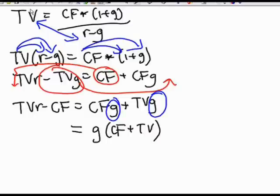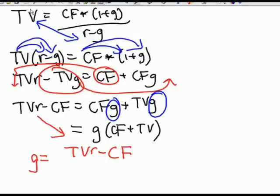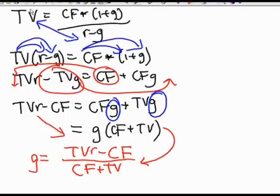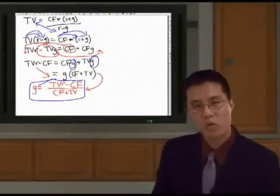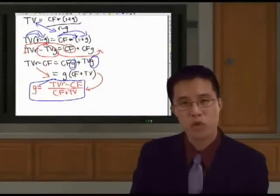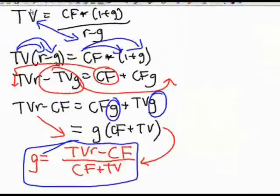We're going to isolate G completely. So G equals (TVR minus cash flow) divided by (cash flow plus TV). This is our superstar equation. We're going to input this formula to calculate the implied perpetual growth rate based on a 7 times EBITDA multiple. Remember: TVR minus cash flow, divided by cash flow plus TV.